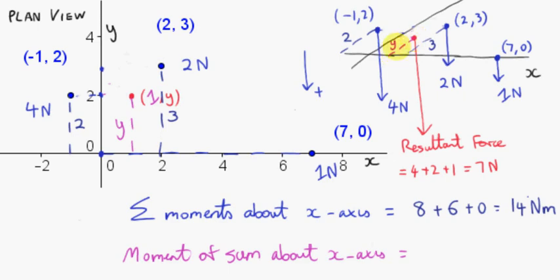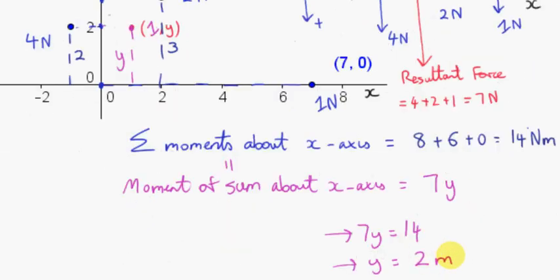Now we can consider the moment of the resultant gravitational force about the x-axis. So we multiply 7 by y, where y is the y value of the center of gravity. y is clearly going to be positive — the center of gravity has to be up in this region, not below the x-axis. We equate these and solve for y, ending up with y equals plus 2 meters. So now we have the coordinates of the center of gravity of the system.